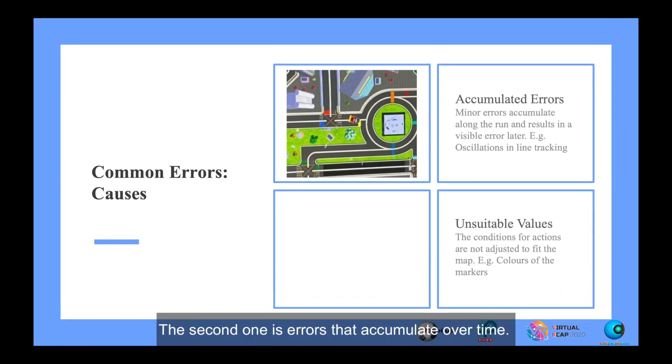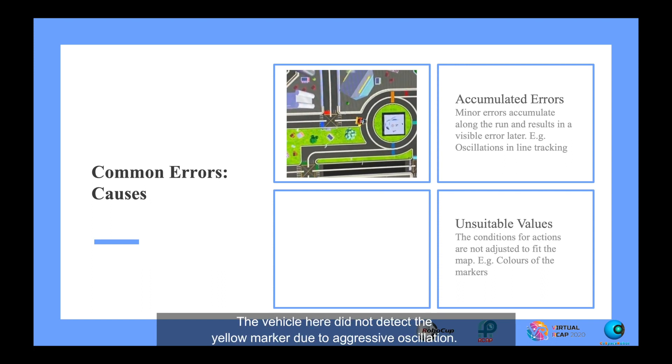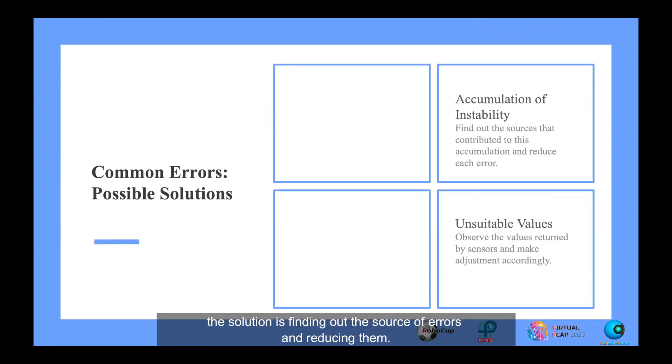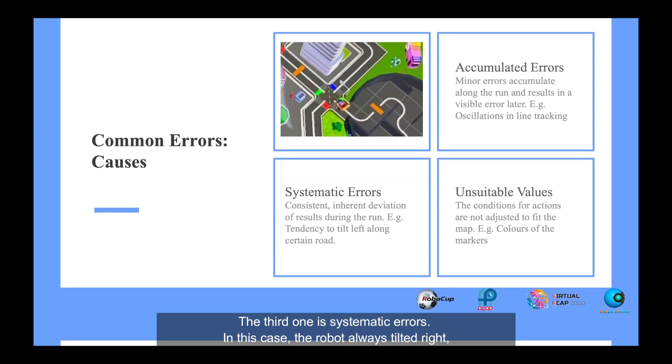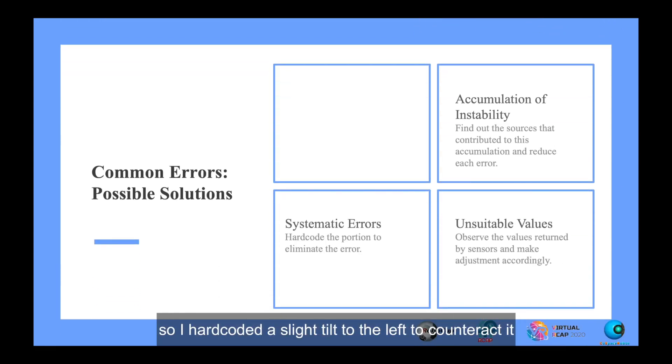The second one is errors that accumulate over time. The vehicle here did not detect the yellow marker due to aggressive oscillation. The solution is finding out the source of errors and reducing them. The third one is systematic errors. In this case, the robot always tilted right, so I hardcoded a slight tilt to the left to counteract it.